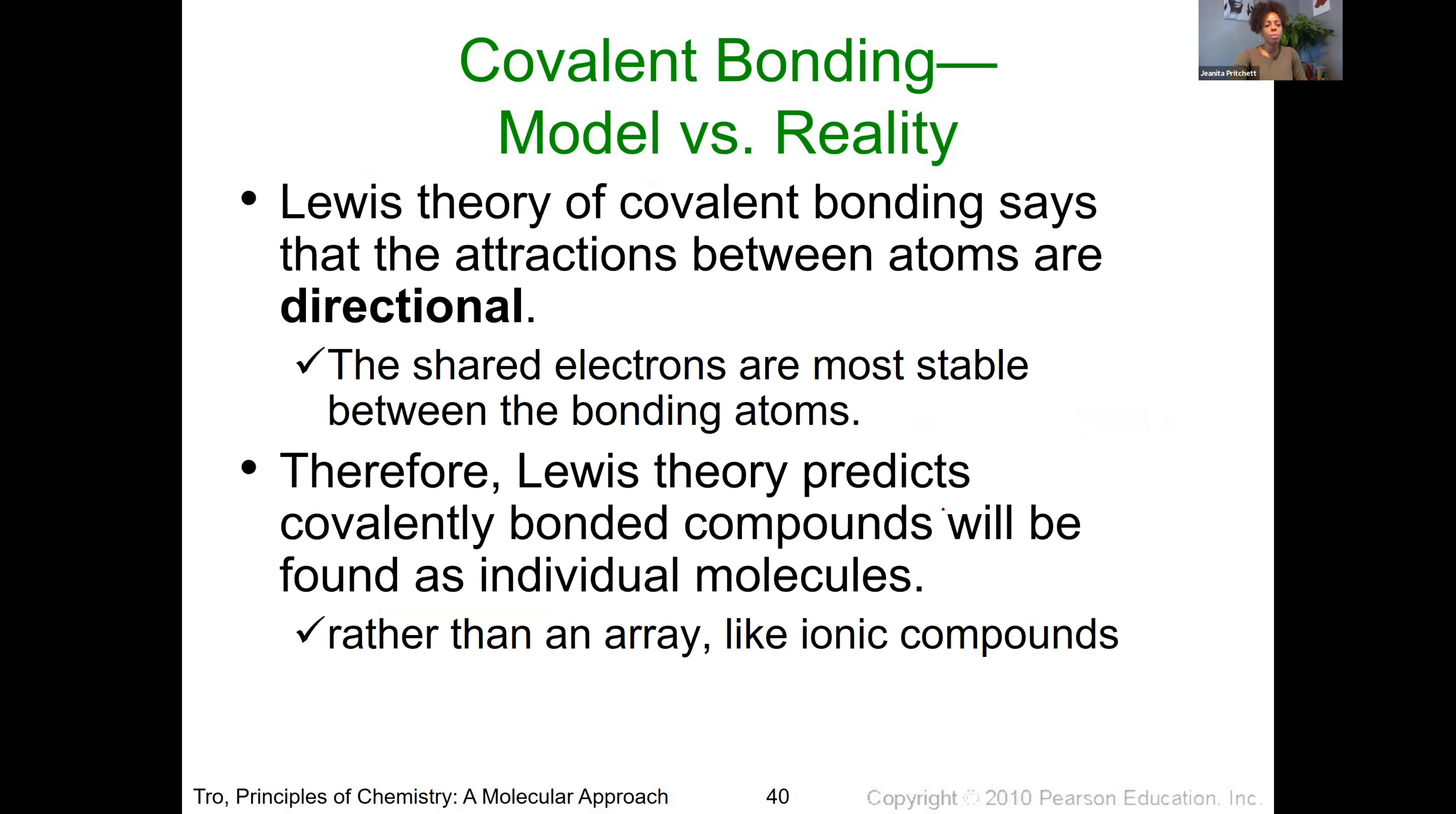And then a few other things to keep in mind with our covalent bonding what happens here. Well, the Lewis theory of covalent bonding says that the attraction between atoms is directional so that's different than what we saw in ionic compounds. So because of this, we can actually have compounds that exist that have nonmetals present as individual molecular units. Remember, ionic compounds, there are no discrete individual molecules. With molecular compounds or these compounds that have these covalent bonding occurring, you can have individual discrete molecules that exist.